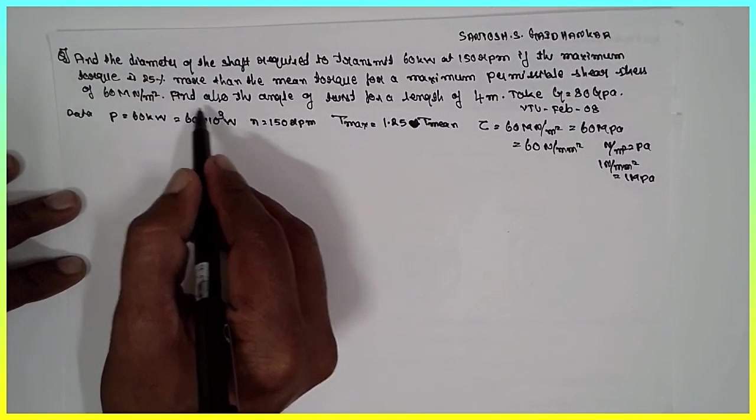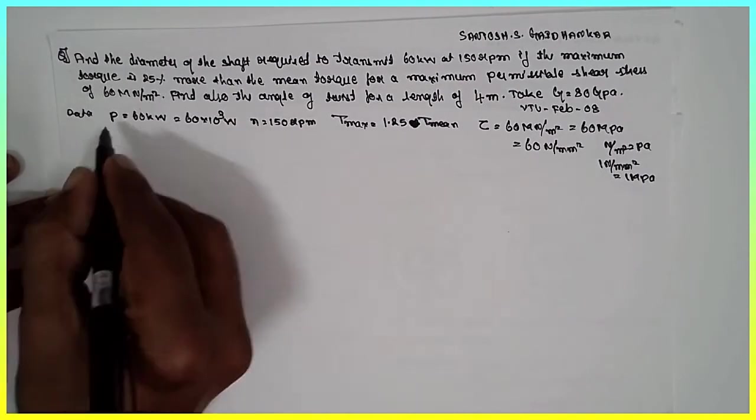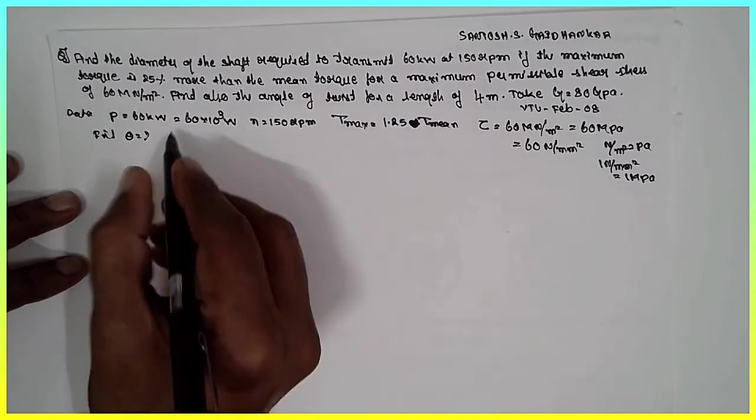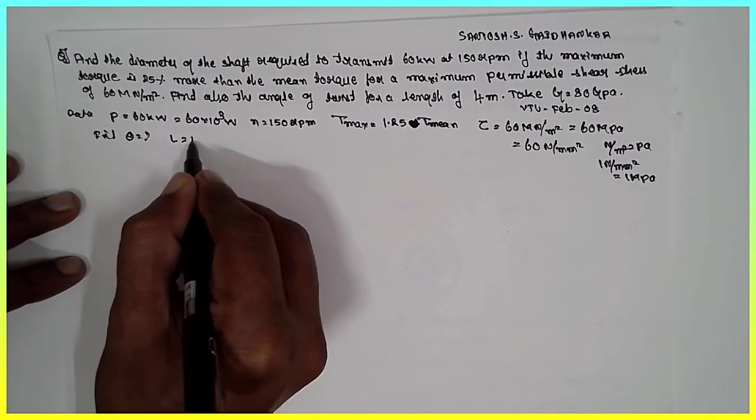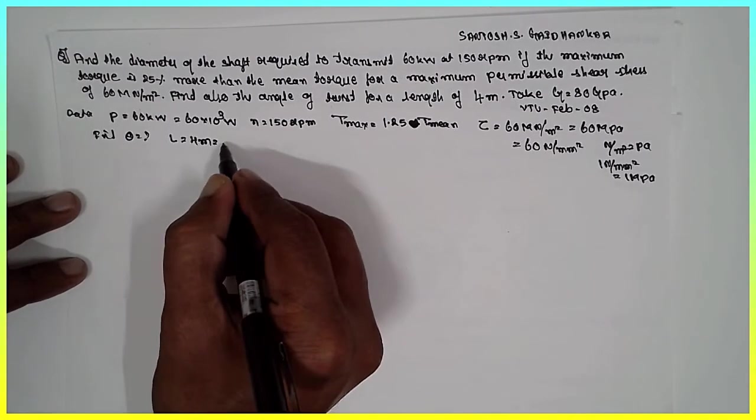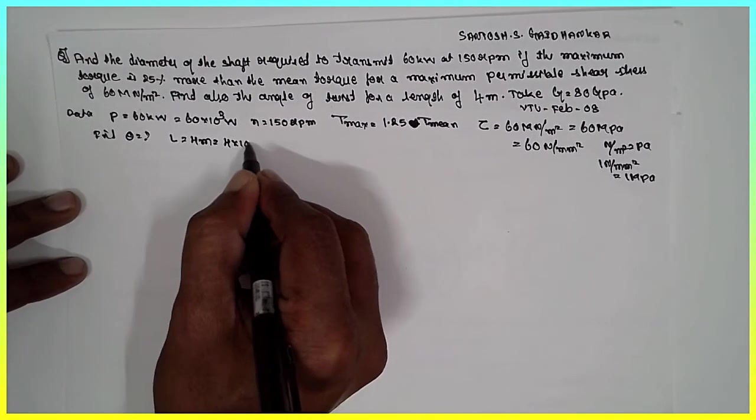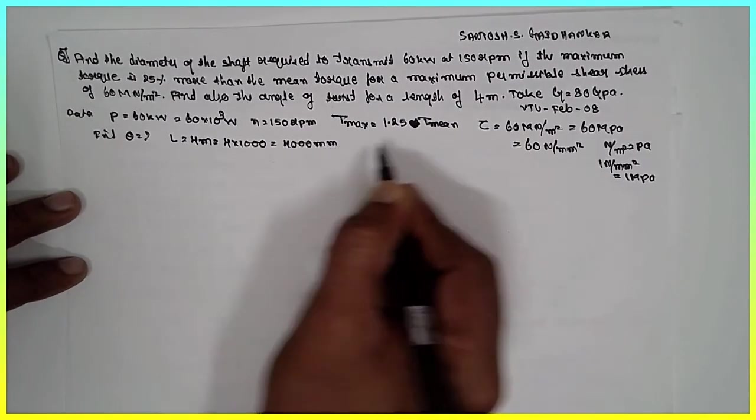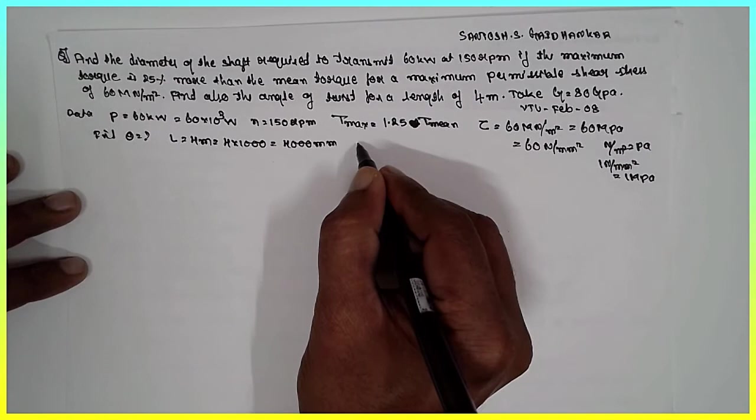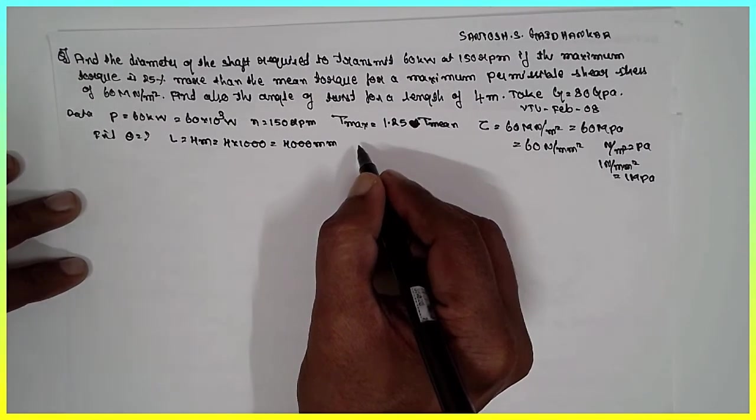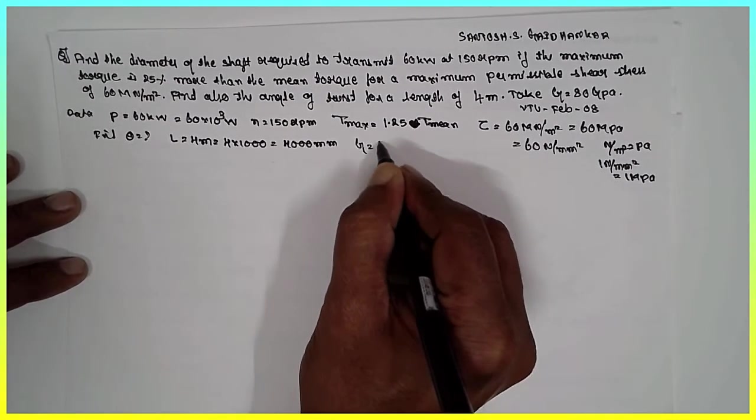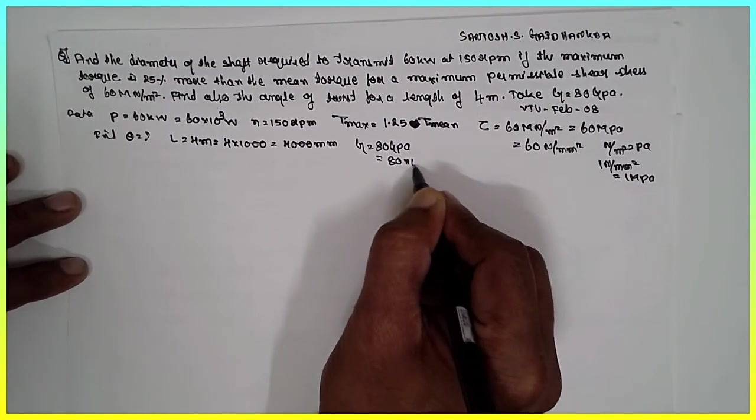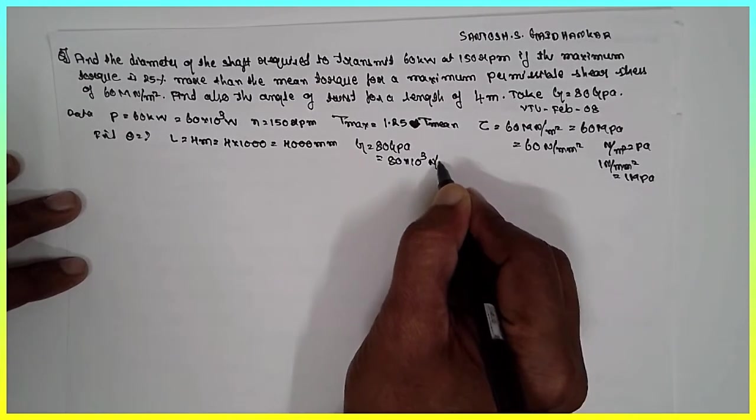Find also the angle of twist. We have to find out theta here, angle of twist. The length is 4 meters. Convert in terms of mm, 4 times 1000, it becomes 4000 mm. And G is given, modulus of rigidity. G is nothing but 80 GPa which can be written as 80 times 10 raised to 3 Newton per mm square.